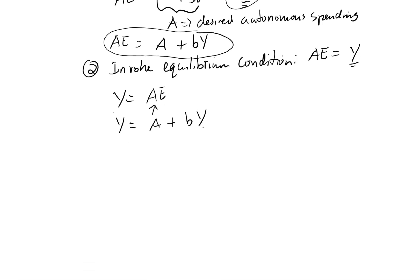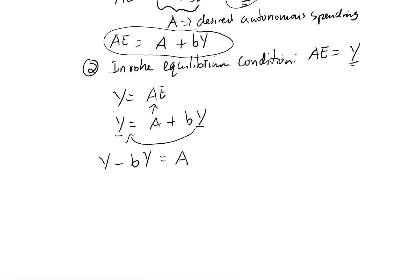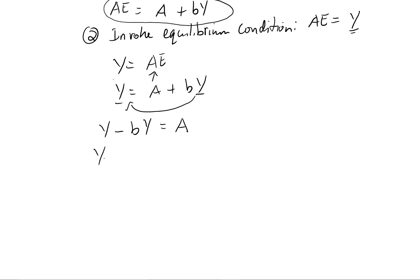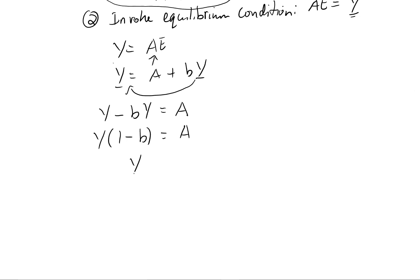Now we want to just solve for the Y. So we've got to move this over. So now we have Y minus B times Y equals A. We have a common factor. So we can take that out. Y times 1 minus B, that's the same thing as the previous line, equals A. We can divide both sides by 1 minus B. And we're left with Y equals A over 1 minus B.